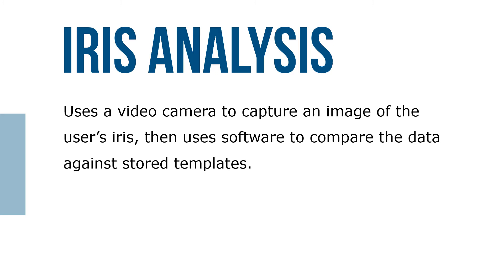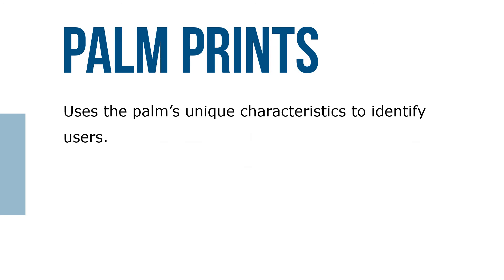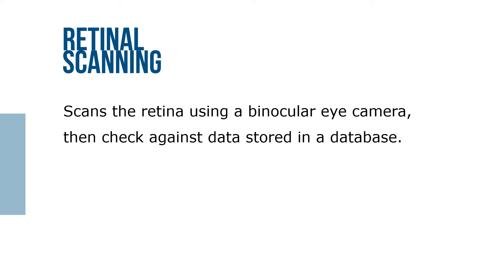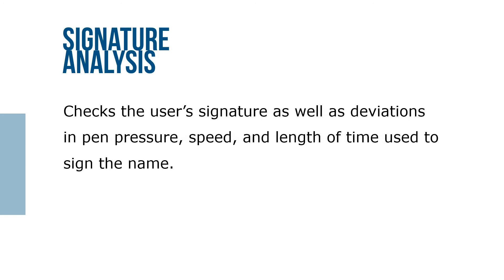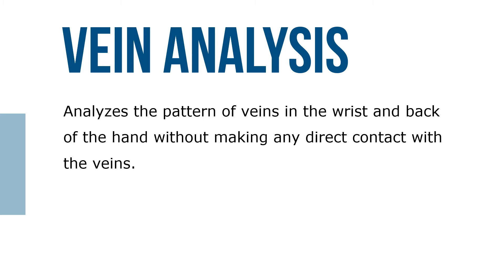Iris analysis uses a video camera to capture an image of the user's iris and then uses software to compare the data against stored templates. Palm prints uses the palm's unique characteristics to identify users. Retinal scanning scans the retina using a binocular eye camera and then checks the data against stored database information. Signature analysis checks the user's signature as well as deviations in pen posture, speed, and length of time used to sign the name.